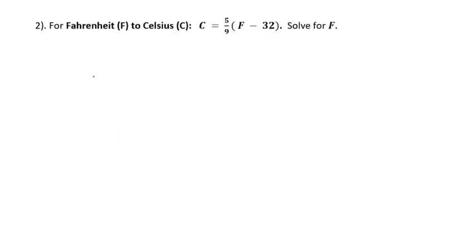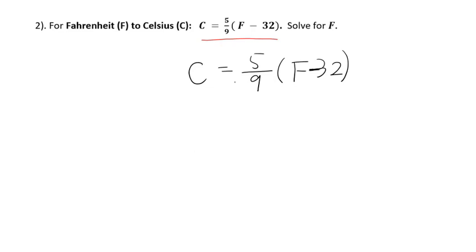Let's go to the second question. Find the Fahrenheit F from this formula. You still need to isolate F on one side. Therefore, we will get rid of this 5 over 9 by multiplying both sides by 9 over 5. The 9 over 5 reduces to 1.